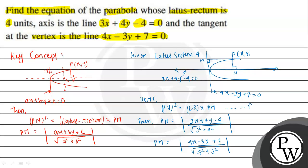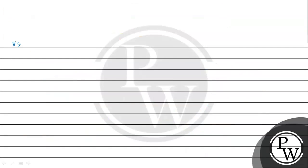Using equation 1, PN² will be (3x + 4y - 4)² / (9 + 16). This gives us (3x + 4y - 4)² / 25. Now we have 4 units for the latus rectum times PM, which is 4 × |4x - 3y + 7| / √(16 + 9).